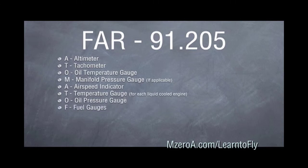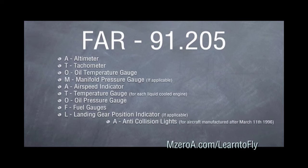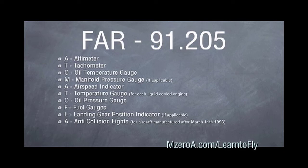F is for our fuel gauges. L is for our landing gear position indicator. Again, this is one of those if it applies scenarios. A is for our anti-collision lights, and this is for aircraft manufactured after March 11, 1996. M is for our magnetic compass. E is ELT, emergency locator transmitter. And S is we must have seatbelts. So this applies for day.